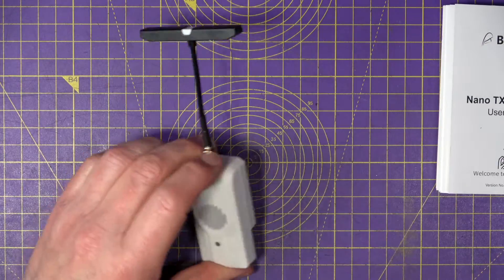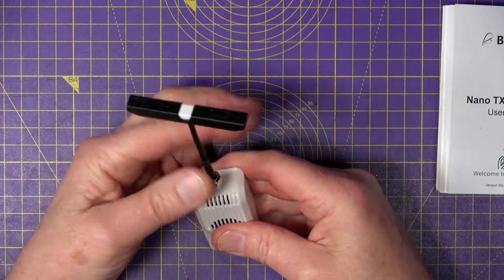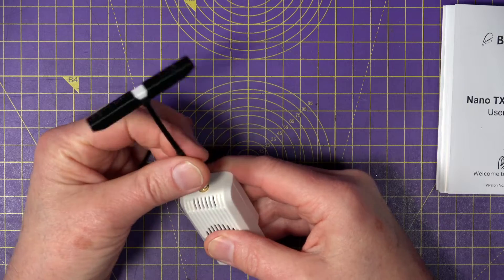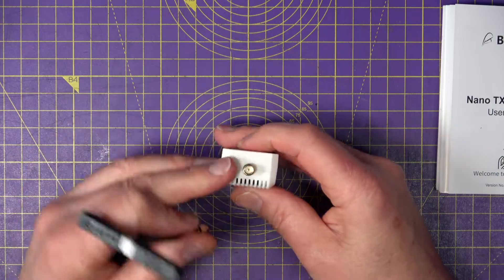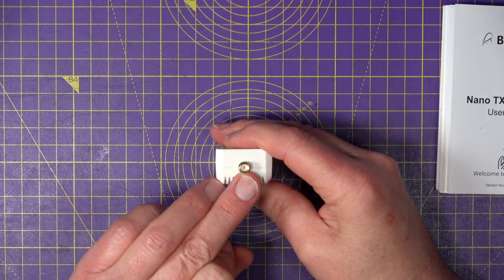Now this 2.4 GHz version uses an RP SMA connector on here, and I noticed on their website that the 868/915 version uses an SMA adapter.